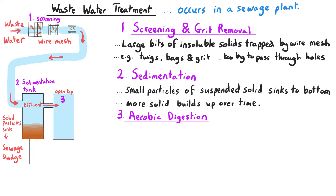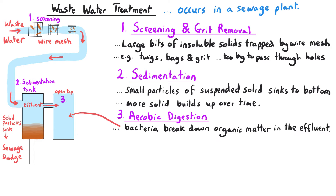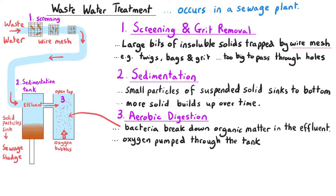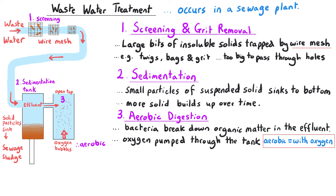The effluent flows out of the sedimentation tank into a second tank where bacteria are added. Air is pumped through this tank, which is stirred, and the bacteria break down organic matter in the effluent in a process called aerobic digestion. Aerobic means the digestion takes place in the presence of oxygen. This breaks down organic matter, including other microbes that might cause harm. Once that process has happened, the water is tested, and if deemed safe, it is pumped out into a river, lake, or the sea.